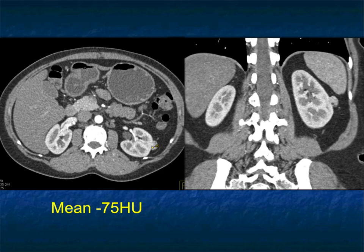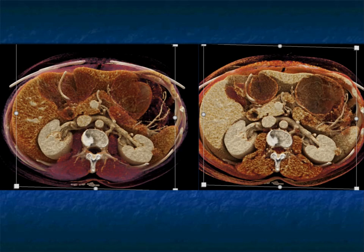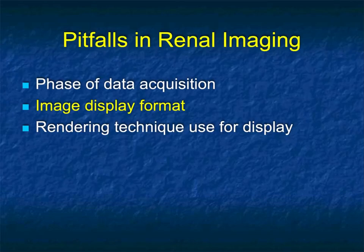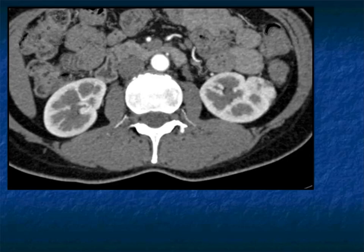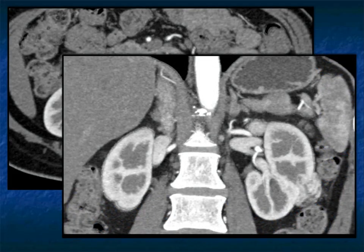An angiomyolipoma is basically a leave-alone lesion. They are sometimes resected — typically when they're over 5 centimeters because the risk of bleeding becomes much higher. Here is a nice cinematic rendering. We want to make certain that people recognize these fat-poor AMLs because they are benign leave-alone lesions. Just a good example: if you look at the left kidney boundary, there's something going on — it looks different — but it's hard to visualize on axials. It's very easy to visualize on the coronals, which make it easier to follow the corticomedullary interface through the whole kidney. Small tumors can be missed because of the imaging plane.